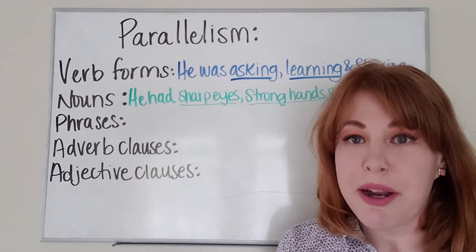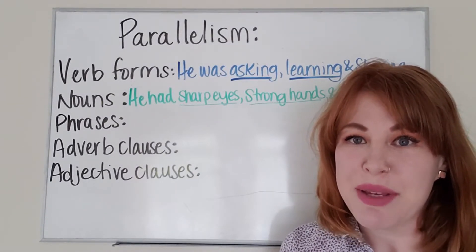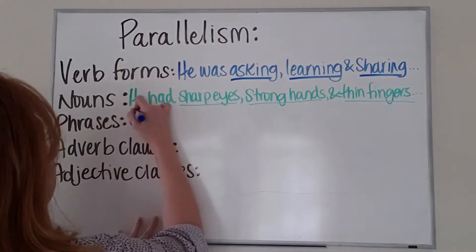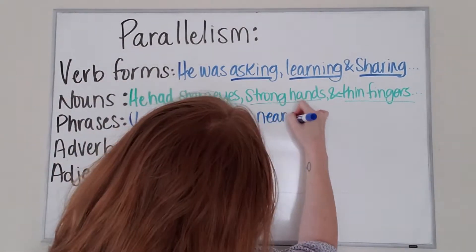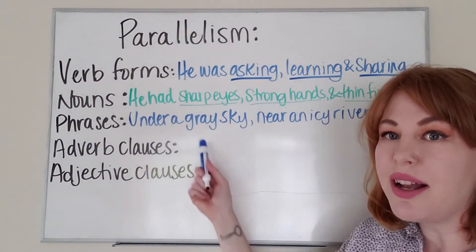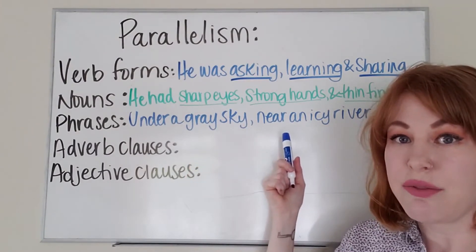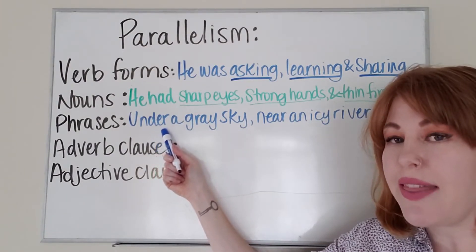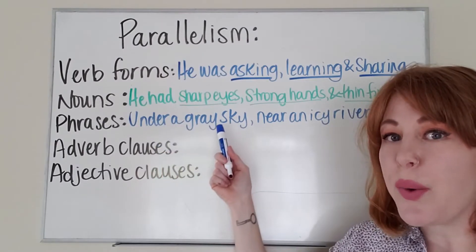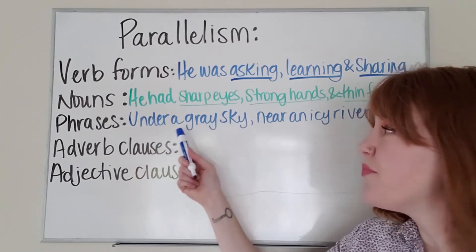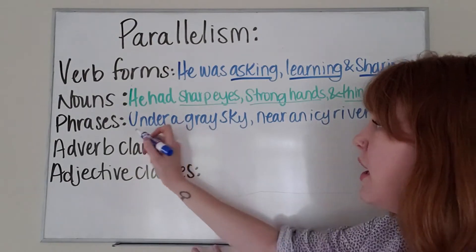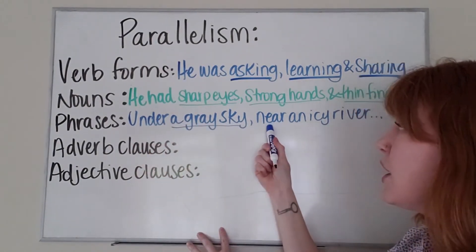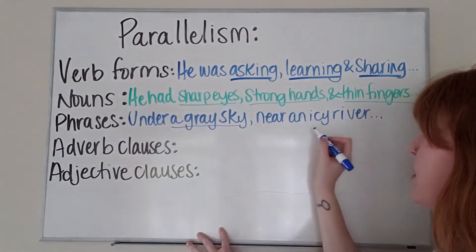Another way parallelism can be used is in descriptions of phrases. In our example, 'under a gray sky, near an icy river' — I'm using the preposition to start and then describing the place where the action is. Under a gray sky, our preposition 'under'; near, our preposition, an icy river.